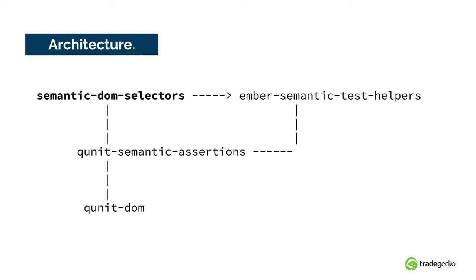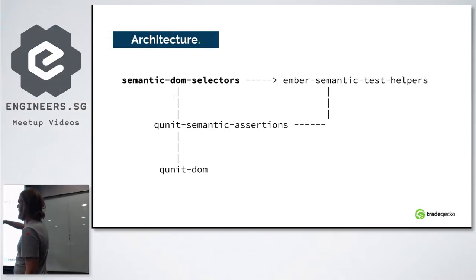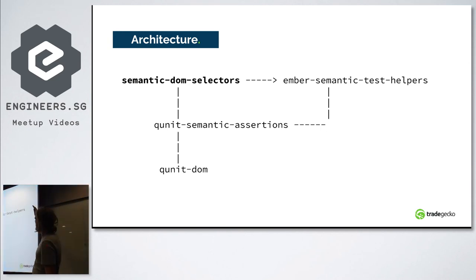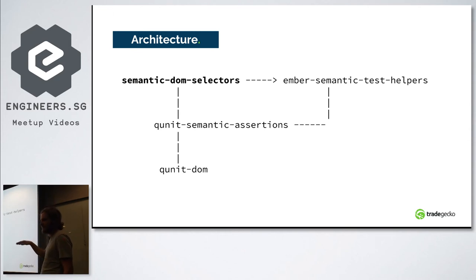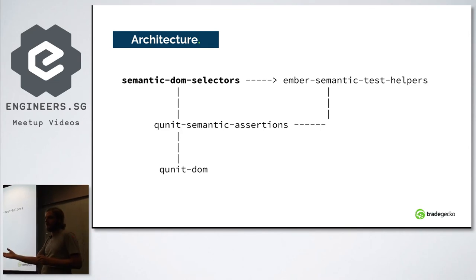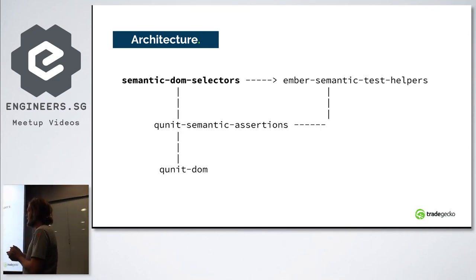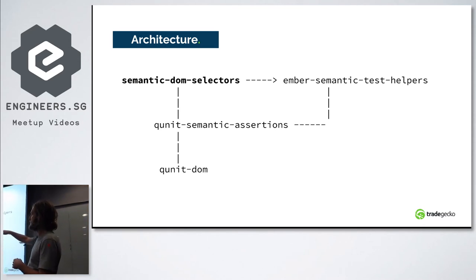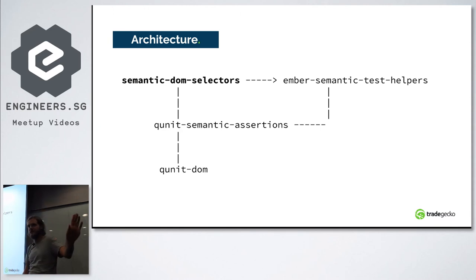Here's the architecture diagram. We have ember-semantic-test-helpers, which uses both semantic-dom-selectors and qunit-semantic-assertions. It has its own infrastructure for the full flow from finding an element to acting on it. We use qunit-dom, which semantic assertions proxies to pass found elements to a DOM assertion engine.